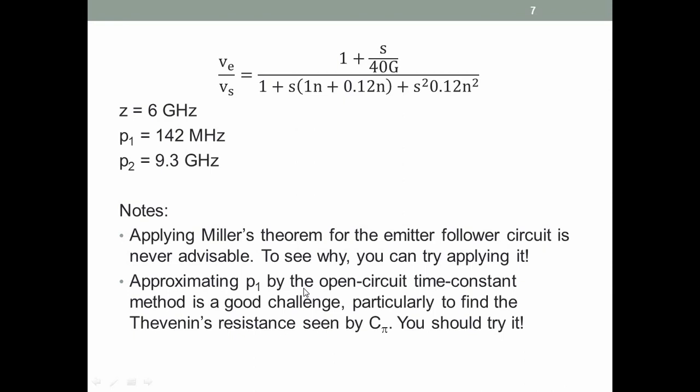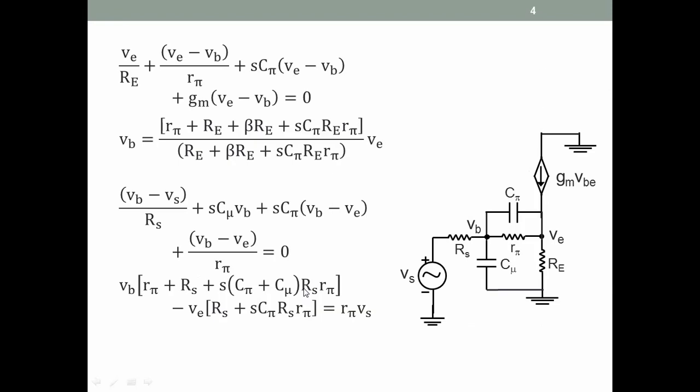Let's look at the circuit. We want to find the resistance seen by Cμ. Resistance seen by Cμ is actually not that difficult. This source is shorted, so it becomes Rs parallel rπ plus RE parallel 1/gm. I'll say it again: the resistance seen by Cμ is Rs parallel rπ plus RE parallel 1/gm.